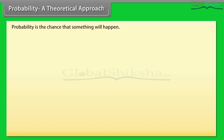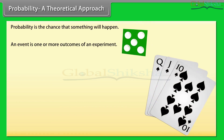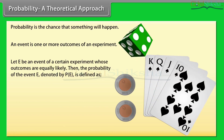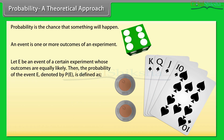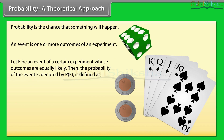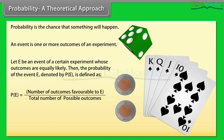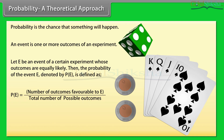Probability: a theoretical approach. Probability is the chance that something will happen. An event is one or more outcomes of an experiment. Let E be an event of a certain experiment whose outcomes are equally likely. Then the probability of event E, denoted by P(E), is defined as: Probability of event E equals number of outcomes favorable to E divided by total number of possible outcomes.